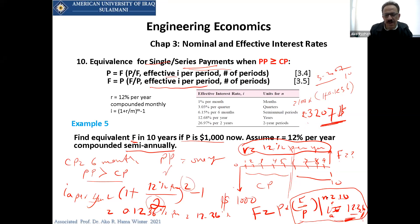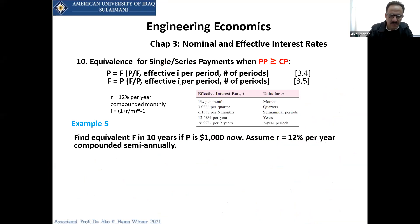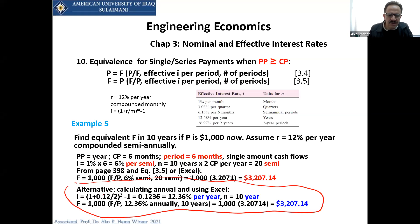Effectively, this was because every six months there was a transaction. Now there is another idea to solve this one — an alternative idea — which is to use the Excel sheet. In Excel we have R and N, so we can use the built-in function.